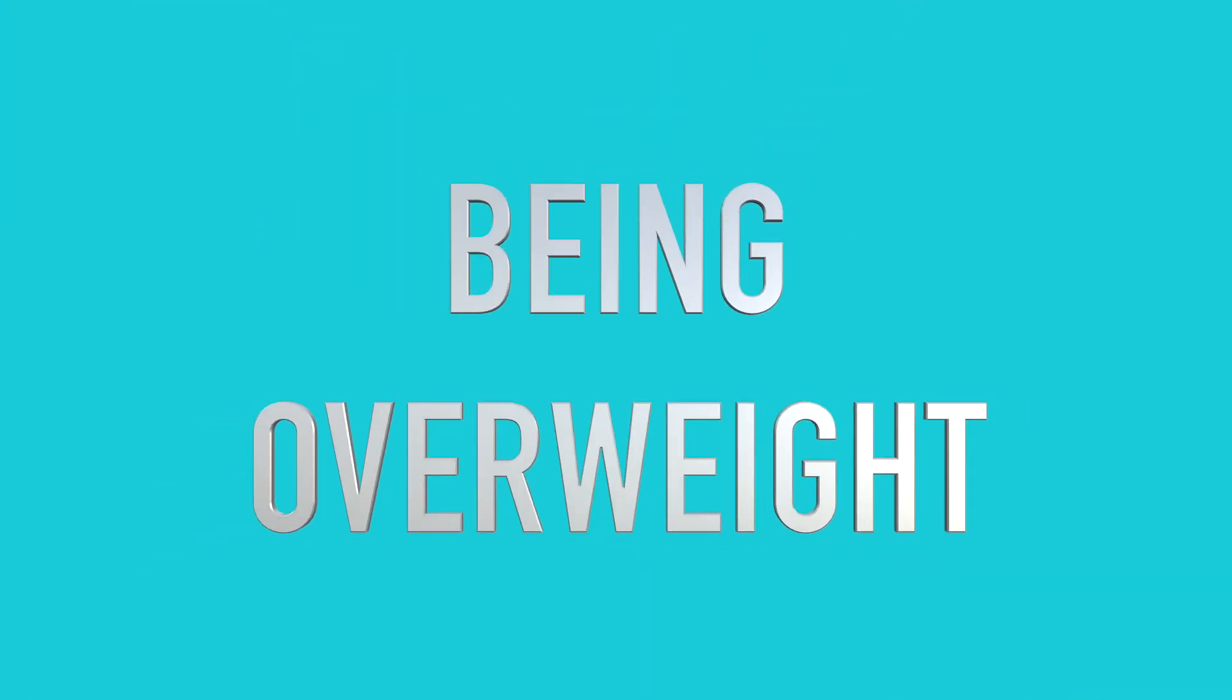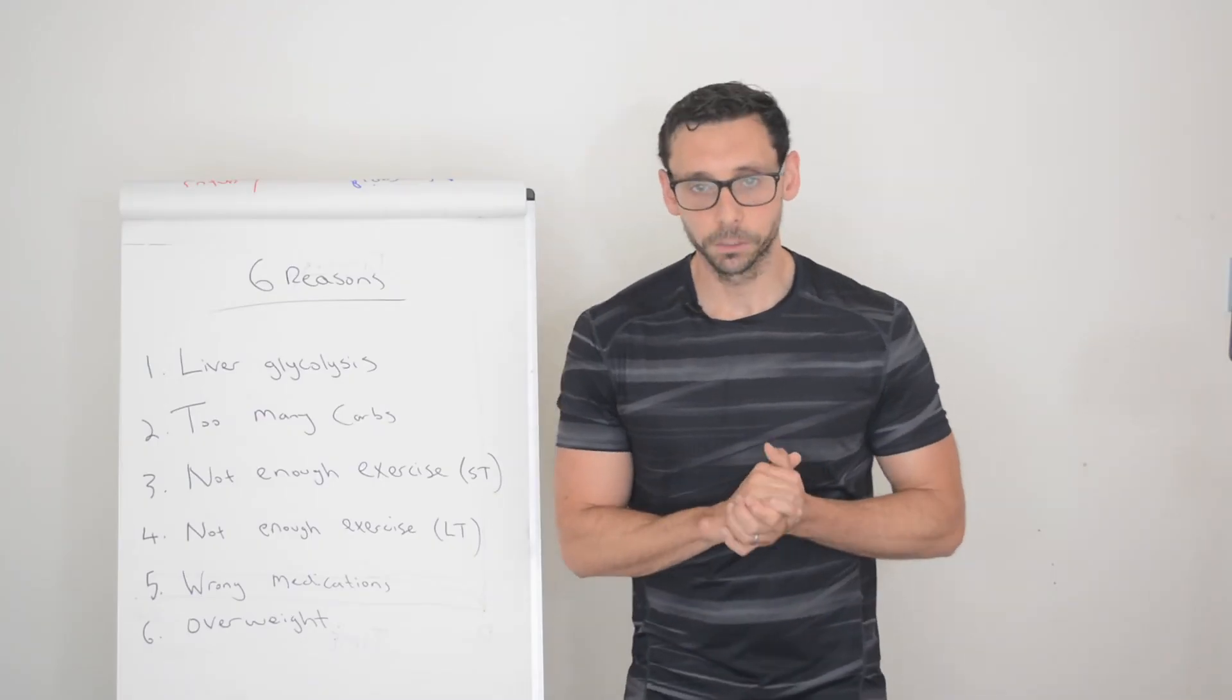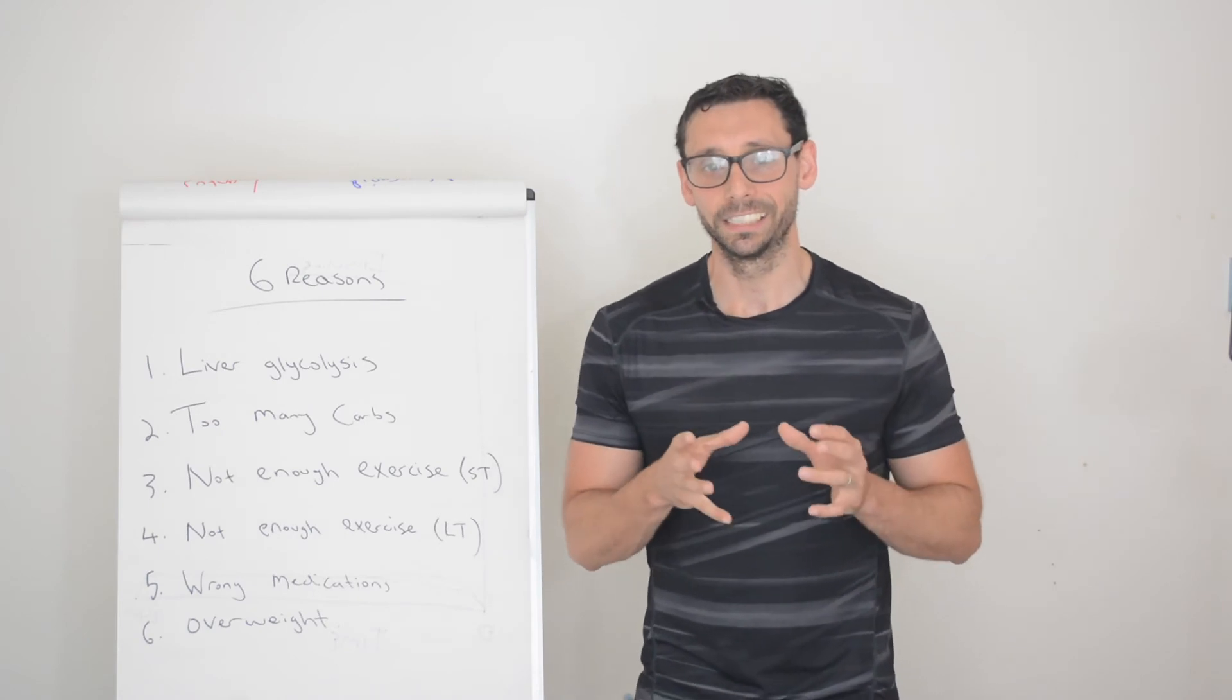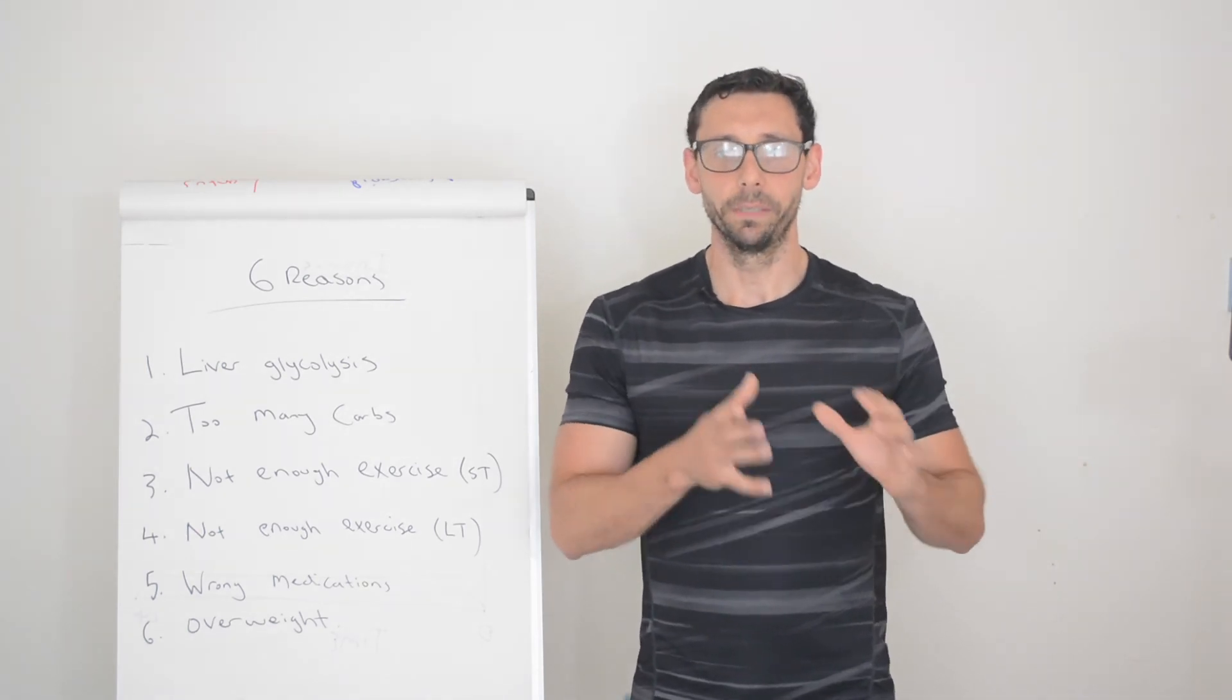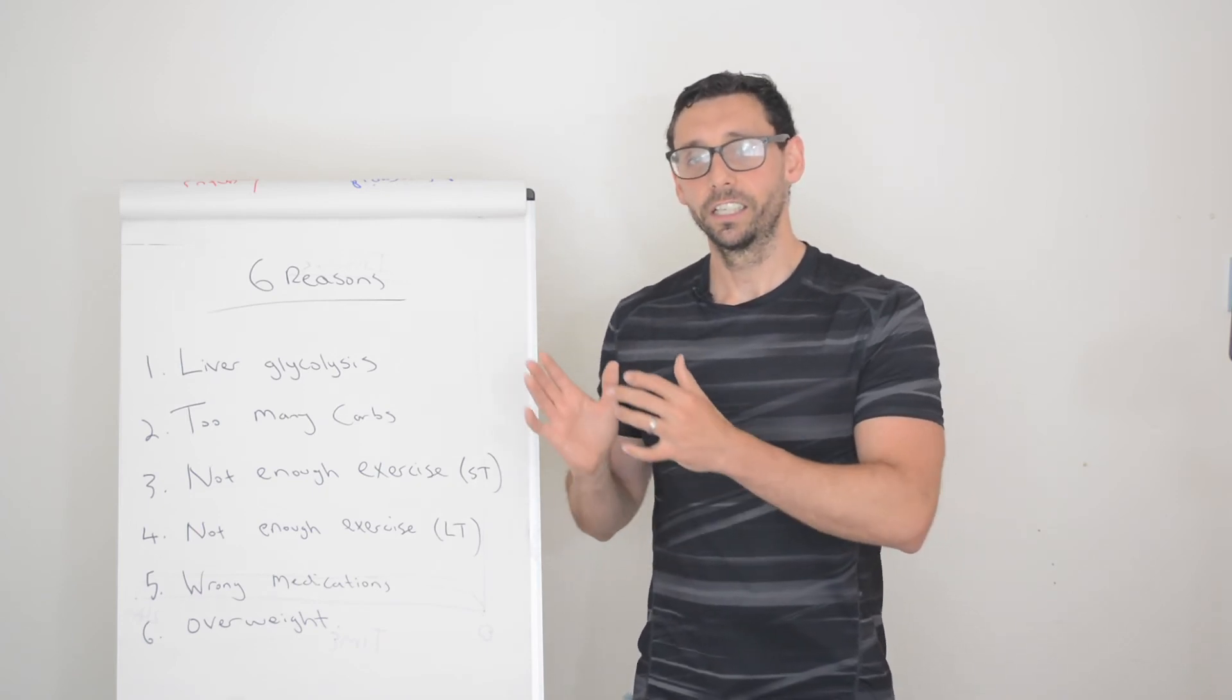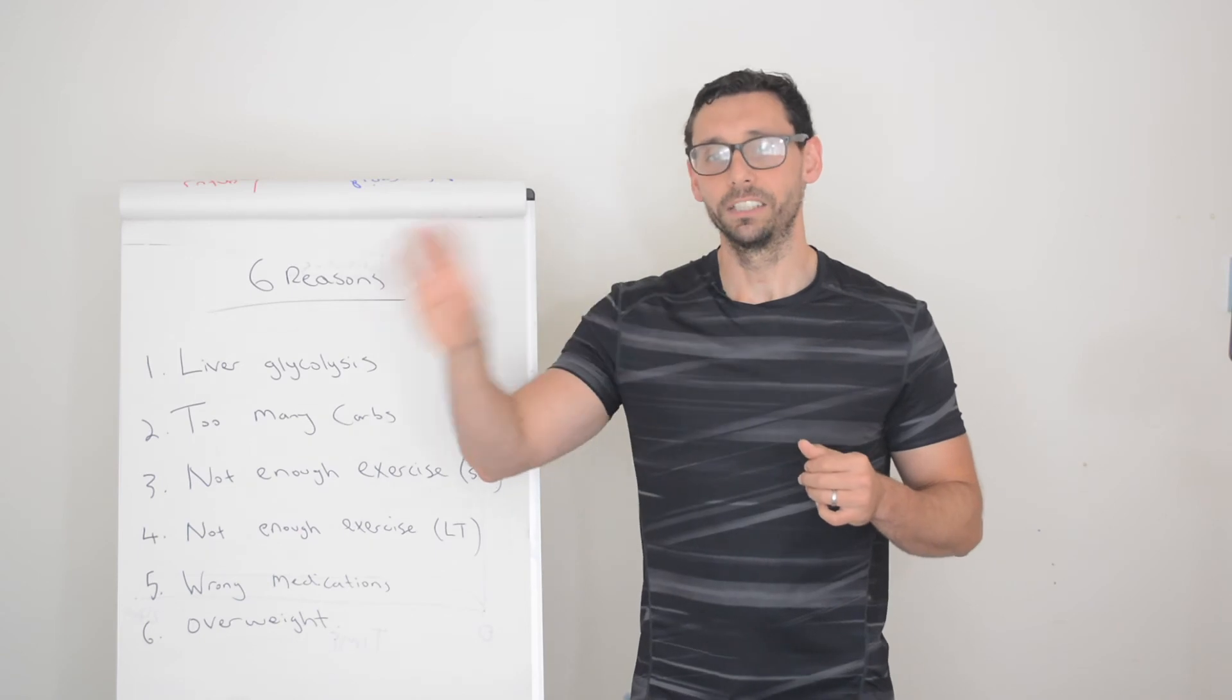Number six, overweight. We saved the best for last because being overweight and obese accounts for over 80% of cases for type two diabetes. It is a big contributor and it's why diabetes gets so much spotlight in the media and in health. Most cases are either completely preventable or could be delayed well into the future. It costs the NHS a huge amount.